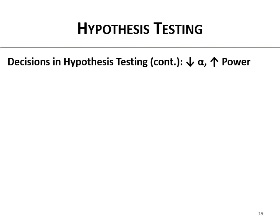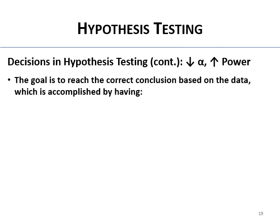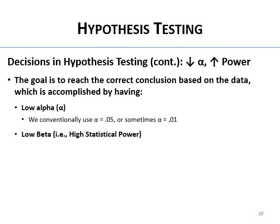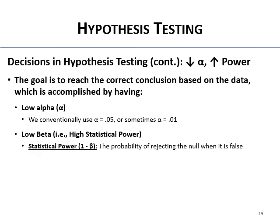Low alpha, high power — the goal in your study is to reach the correct conclusion based on the data. The goal is not just to reject a null; we're trying to be scientists, not just write exciting papers. You reach the right conclusion with low alpha — typically 0.05, occasionally 0.01 — meaning a 5% chance of making a Type I error. And you want low beta, which means high statistical power (1 minus beta): the probability of rejecting the null when it's false — finding an effect when one truly exists.